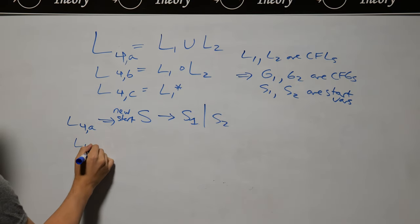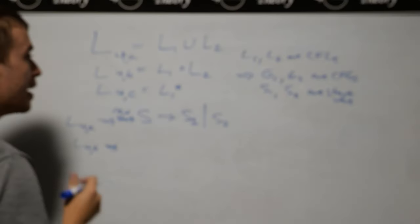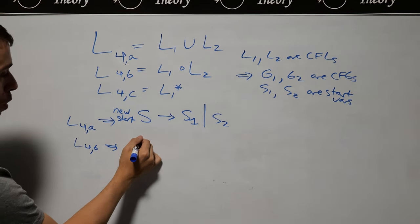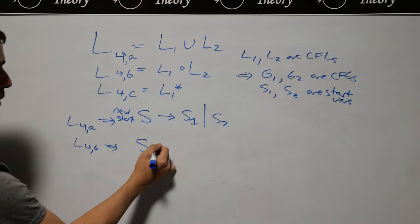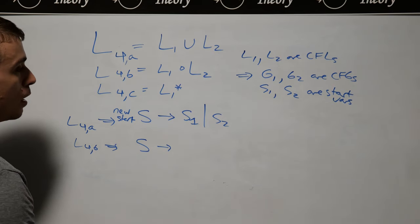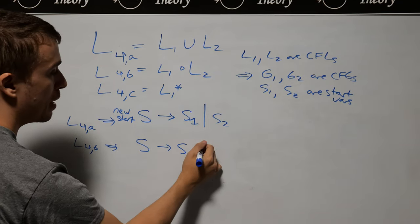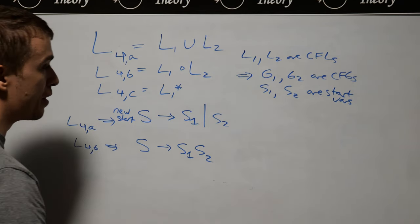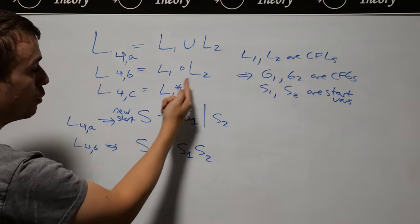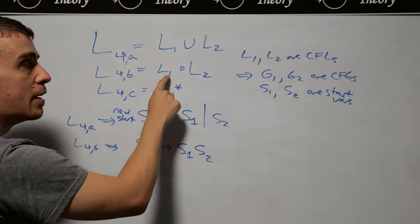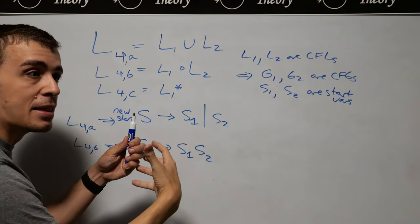Okay, so now let's do L4B. And we can do something very similar. What we can do is, again, a new start variable is still going to be S here. Whereas now, I'm going to have not S1 or S2, I'm going to put S1, S2 together. Because concatenation of two languages says, pick a string out of here, string out of here, and then combine the two together.